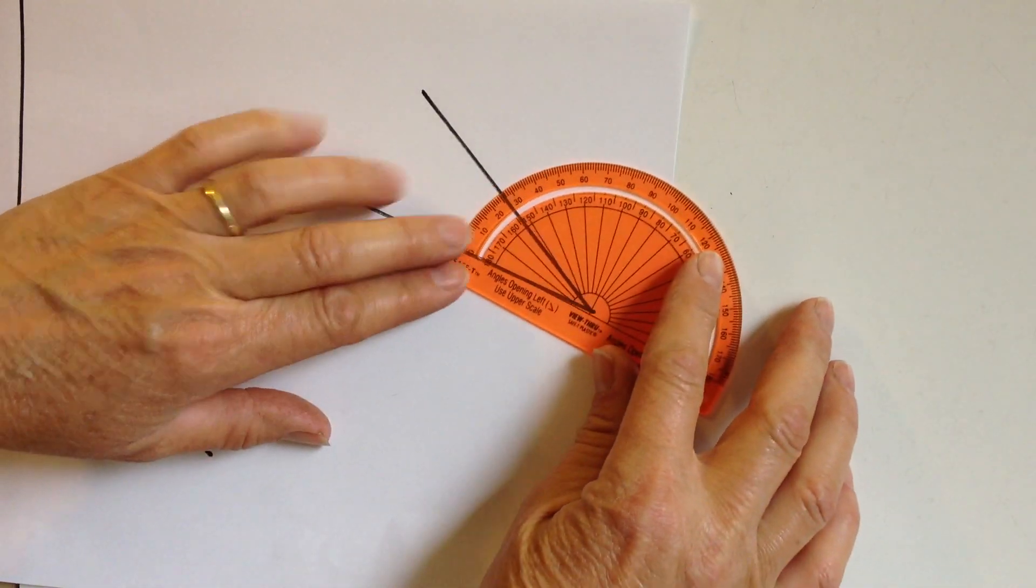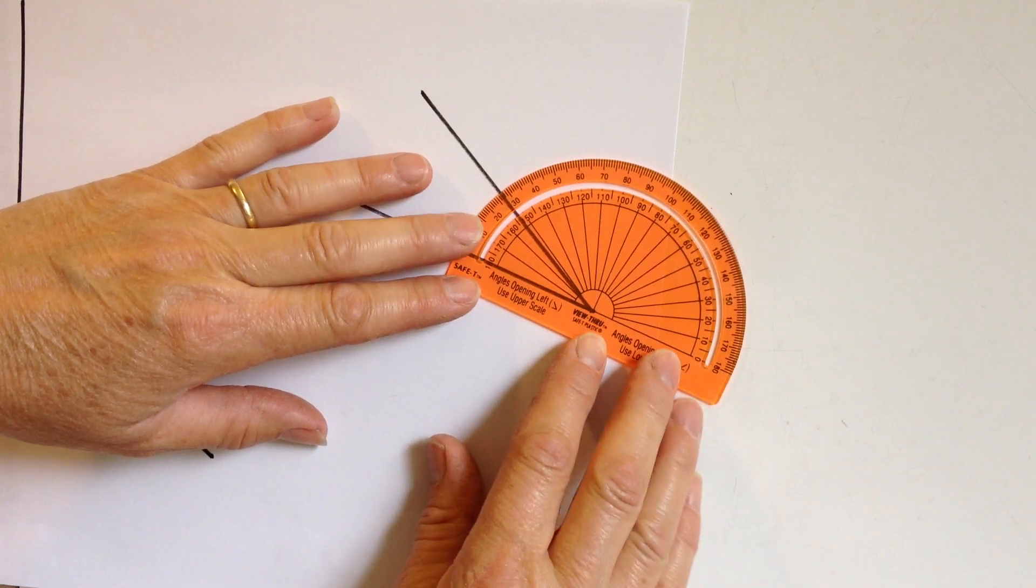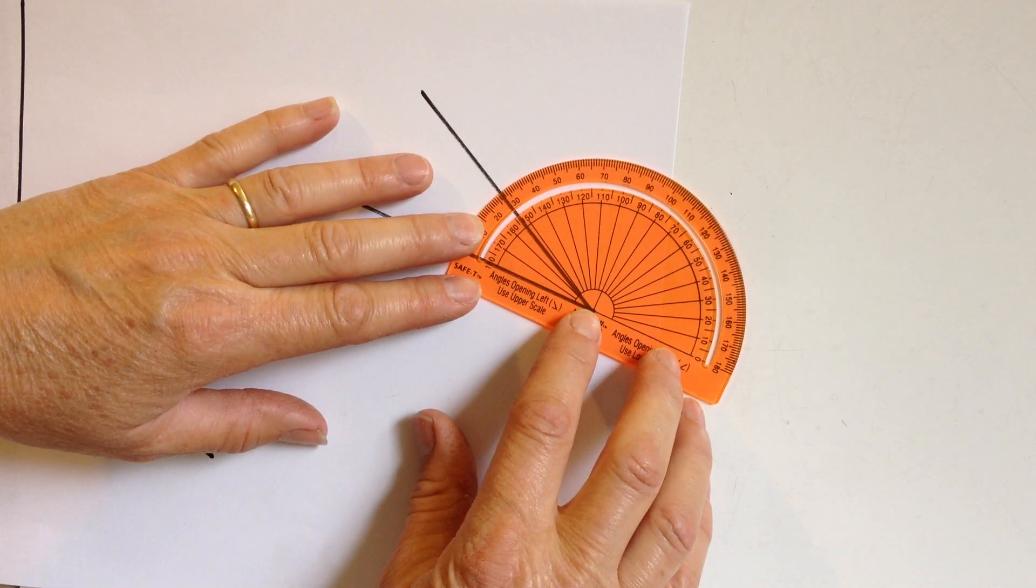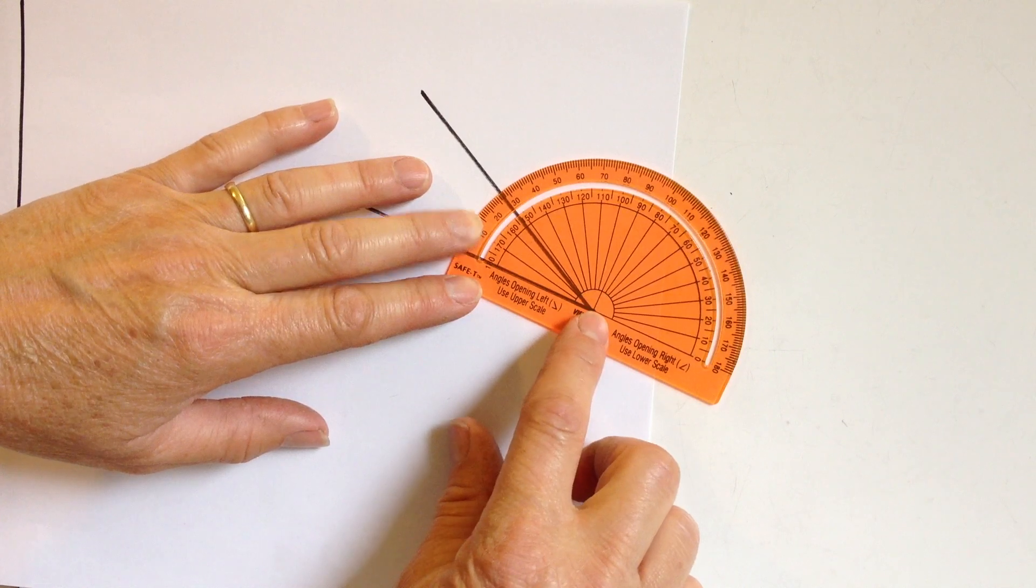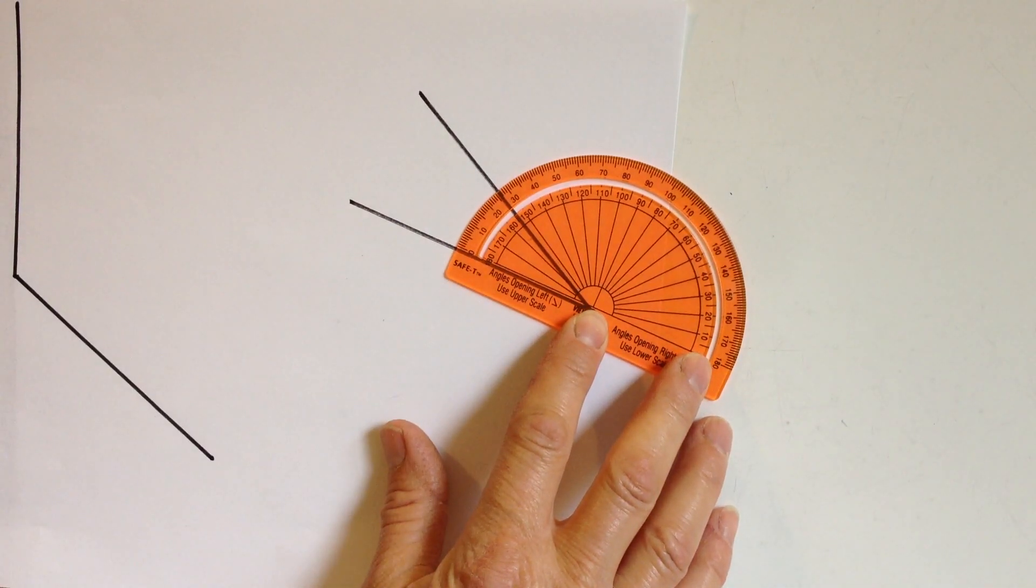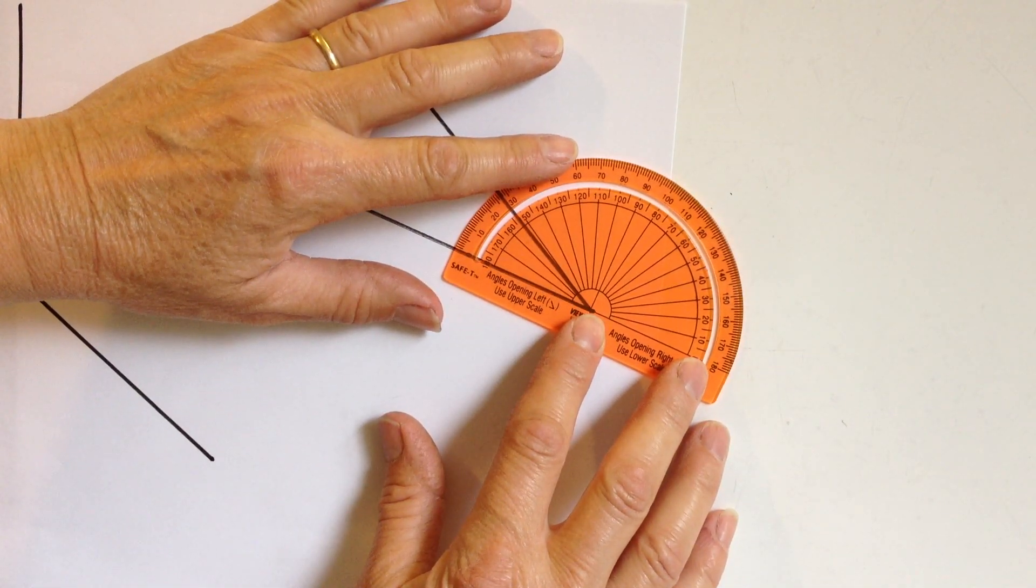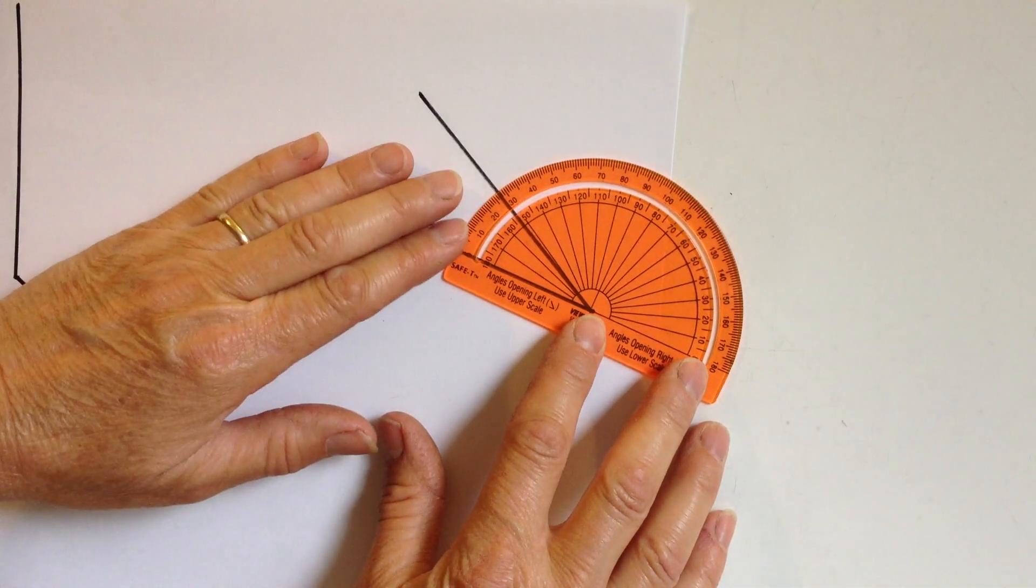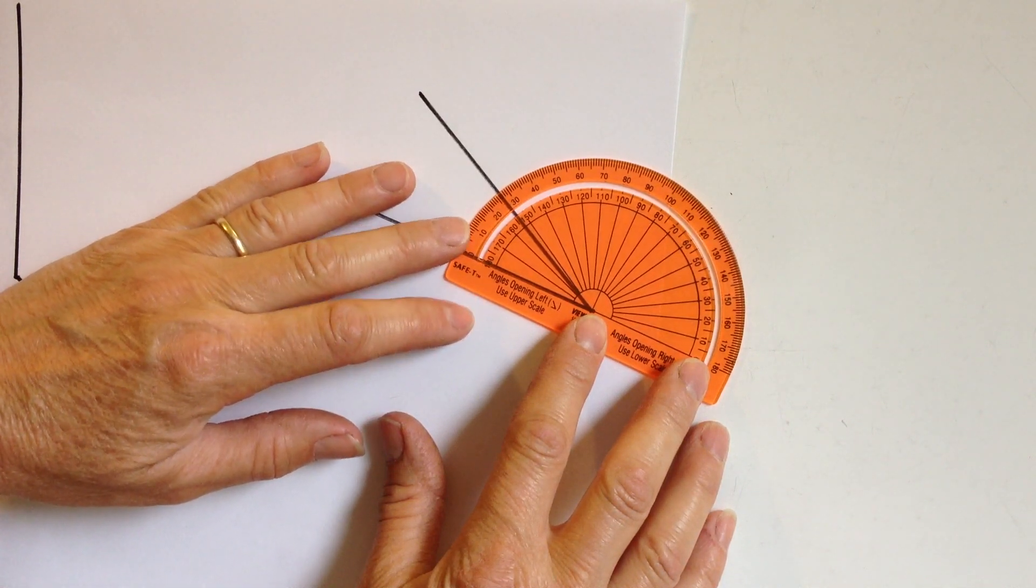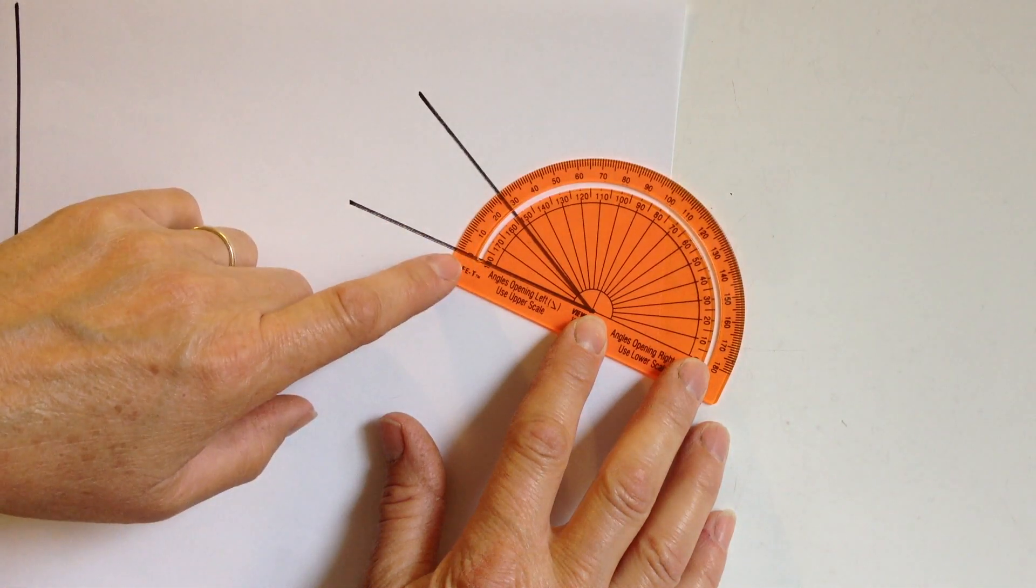If I want to measure this angle right here, I'm going to line up the vertex with the center of the protractor circle and line up zero. You can see that zero with the side of the angle.